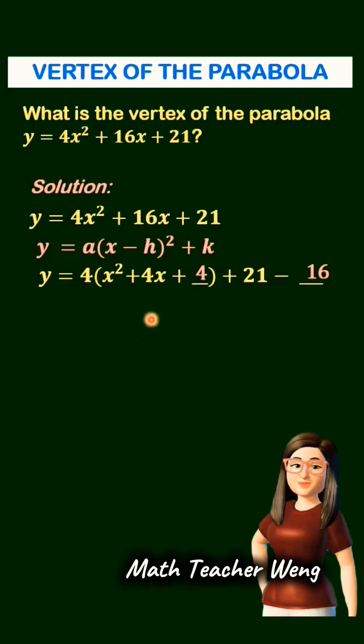Now, we will factor this perfect square trinomial inside the parenthesis. So we have y equals 4 quantity x plus 2 squared plus 5.